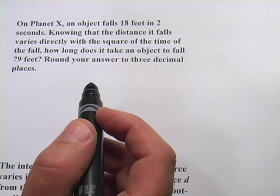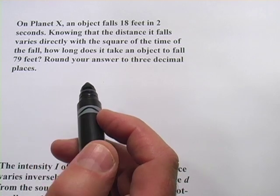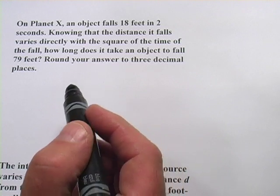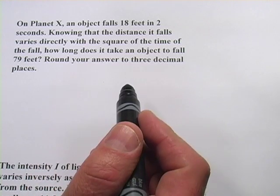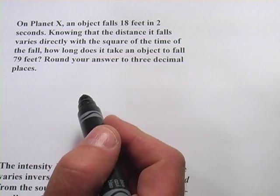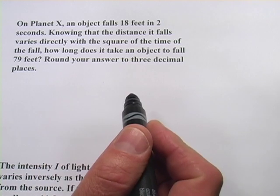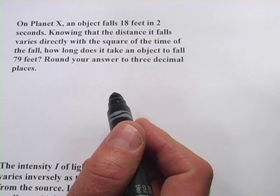In these problems, we're dealing with a kind of direct and inverse variation. The only difference is, instead of something varying directly or inversely with another thing, it's going to vary with the square of that thing. So this is direct and inverse variation squared.